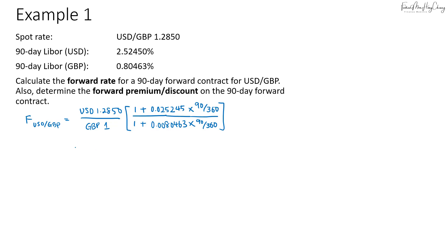Calculating the forward rate from this gives us USD 1.2905 over 1 pound.